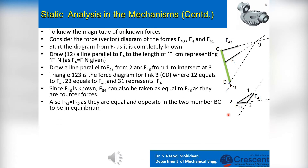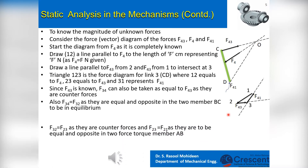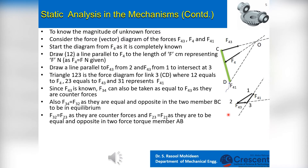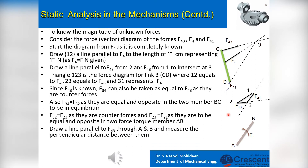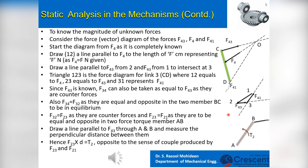Also, F34 equals F32 as they are equal and opposite in the 2-force member BC to be in equilibrium. F32 equals F23 as they are counter forces, and F23 equals F21 as they are to be equal and opposite in the 2-force and torque member, link AB. Now we need to find the torque of equilibrium T2 acting on link AB. Draw lines parallel to F23 at point A and F21 at point B and measure the perpendicular distance between them. Hence F23 × d equals T2, opposite to the sense of couple produced by forces F23 and F21.